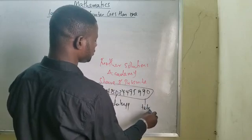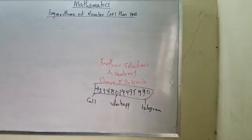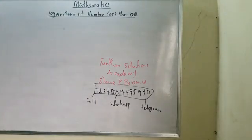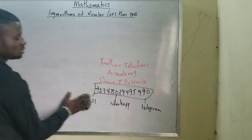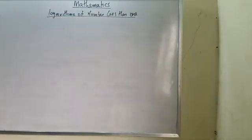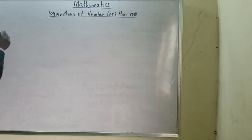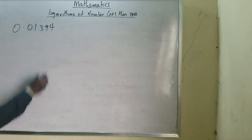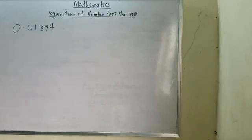Telegram is also allowed. You can also leave a comment below on the video. Now, I will be teaching you on the logarithm of numbers less than one. A number less than one means the number can be, for instance, zero point something. Look at this number: I have 0.01394. Now, looking at it, this number is less than one. What I need you to understand here is that I want to express this in terms of logarithm.